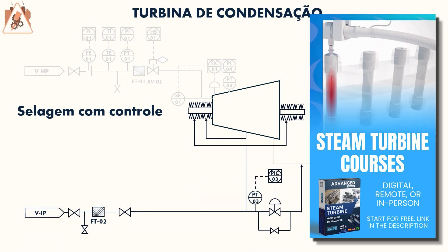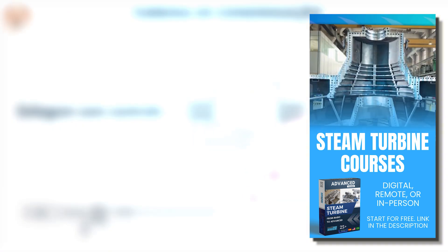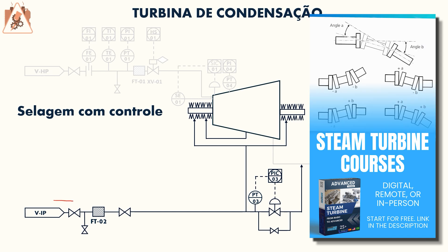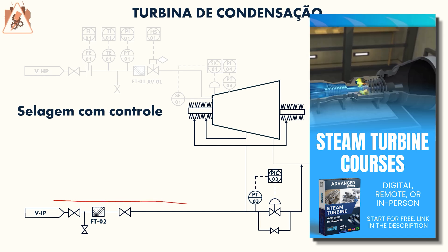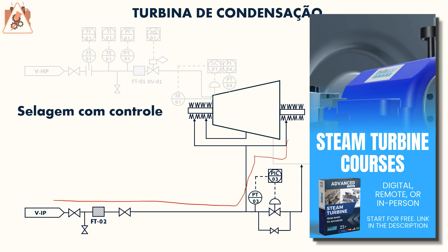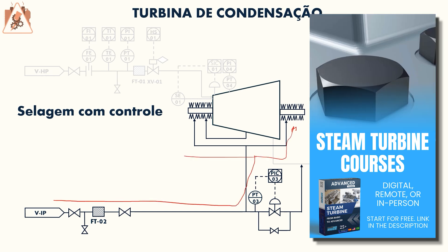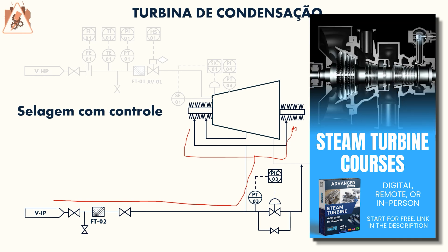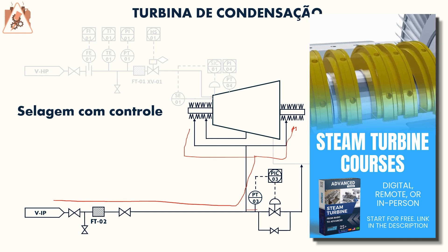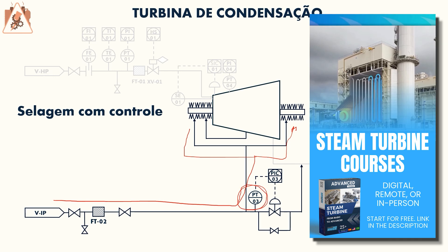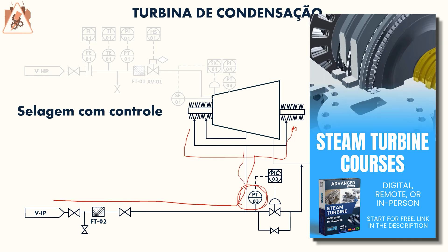Excess steam is controlled by a valve. If we have too much steam, we open this valve and align part of this steam to the condensate system. In systems where the latest API 612 version is already valid, these are basically already automated systems.